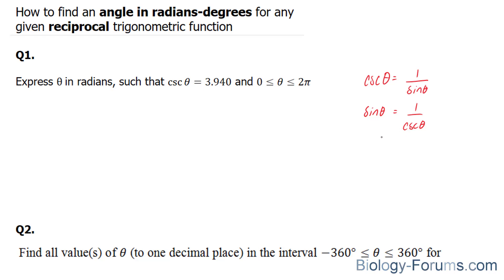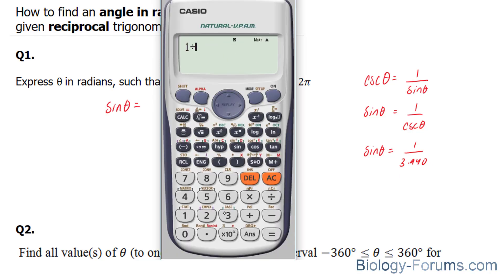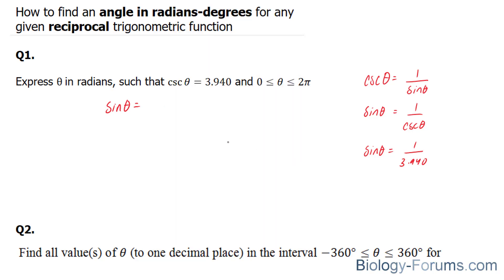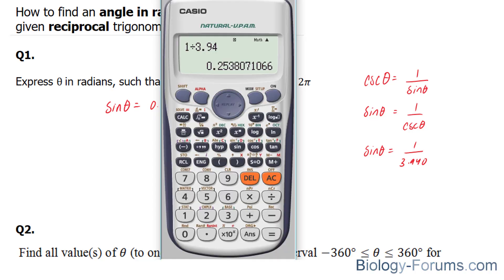The way we do that is quite simple. Sine theta equals 1 over this value, 3.940. Therefore, sine theta equals—let's use our calculator—1 divided by 3.94 equals 0.2538.